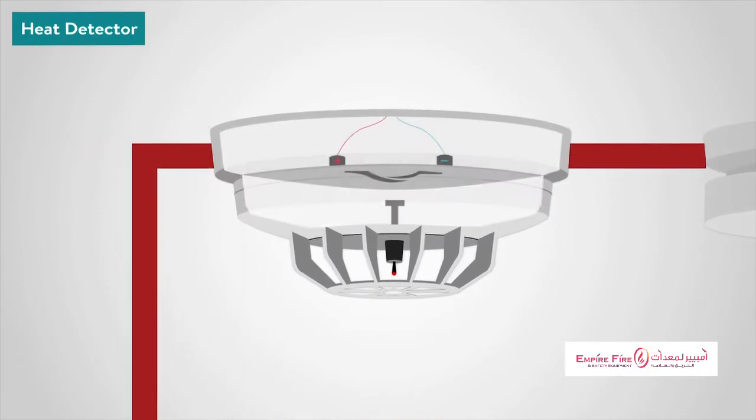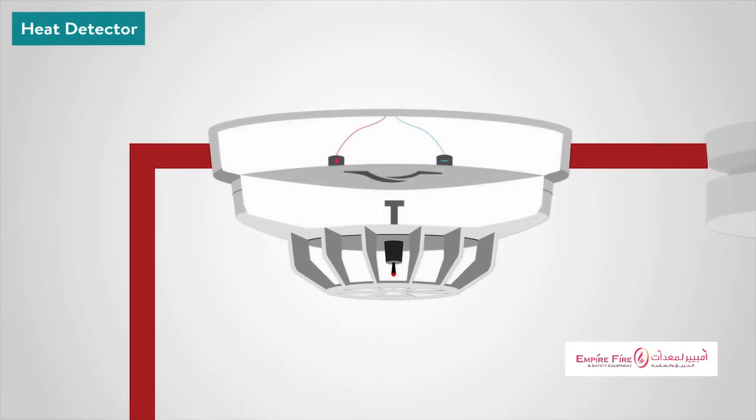Commonly, heat detectors work in a similar way to an electrical fuse. The detectors contain a eutectic alloy which is heat sensitive. When a certain temperature is reached, the alloy turns from a solid to a liquid, which in turn triggers the alarm.